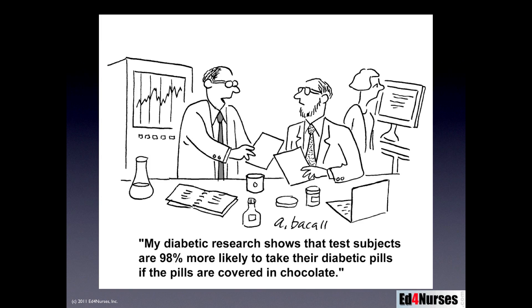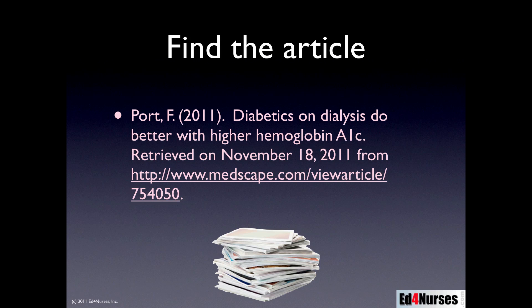If you'd like to get more information, you can find the article by going to medscape.com, view article 75-40-50. It's a report done by Dr. Porth and colleagues on diabetics on dialysis doing better with a higher hemoglobin A1C level.